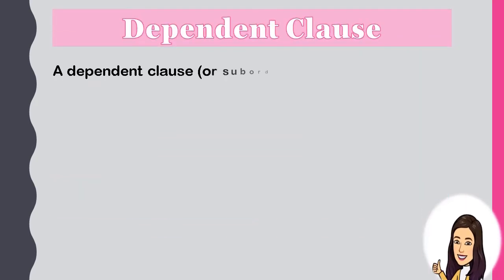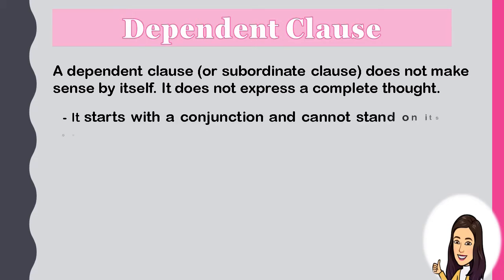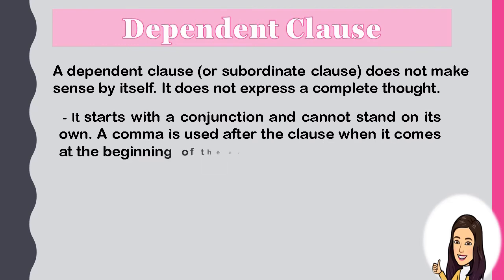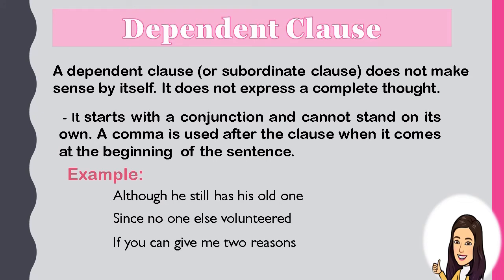A Dependent Clause, or Subordinate Clause, does not make sense by itself. It does not express a complete thought. It starts with a conjunction and cannot stand on its own. A comma is used after the clause when it comes at the beginning of the sentence. Examples: 'Although he still has his old want.' 'Since no one else volunteered.' 'If you can give me two reasons.' Notice that these clauses have an incomplete thought — they cannot stand on their own.